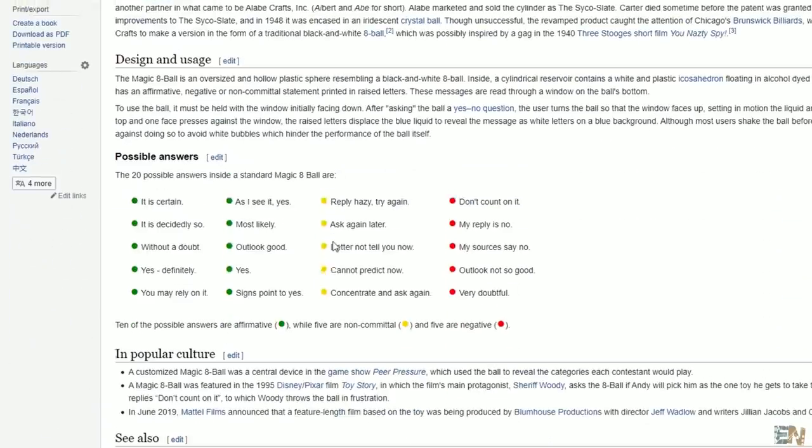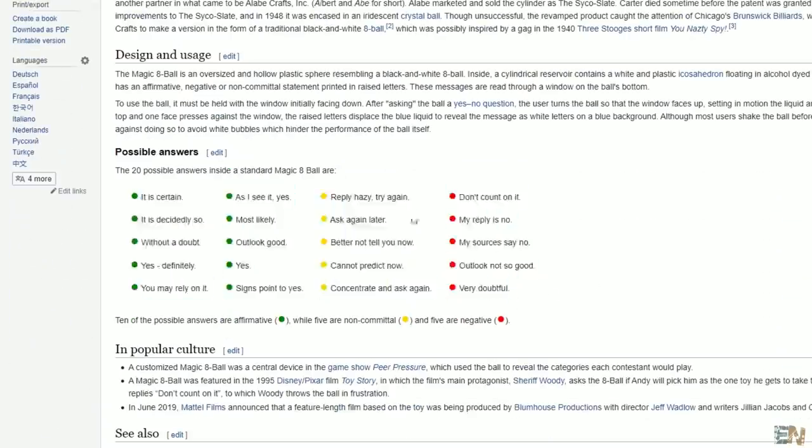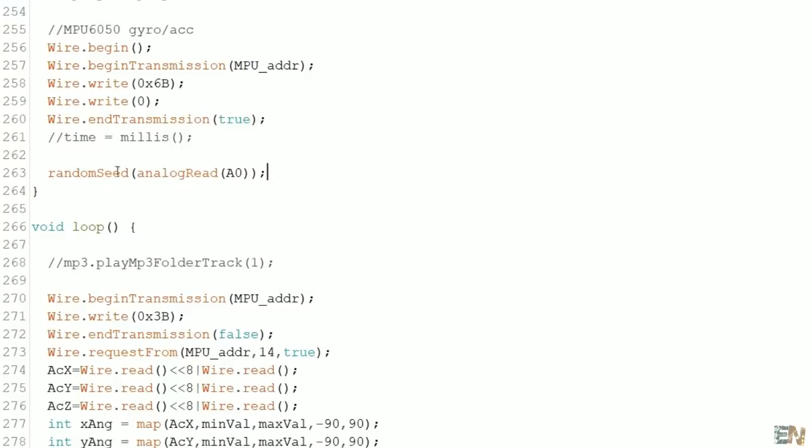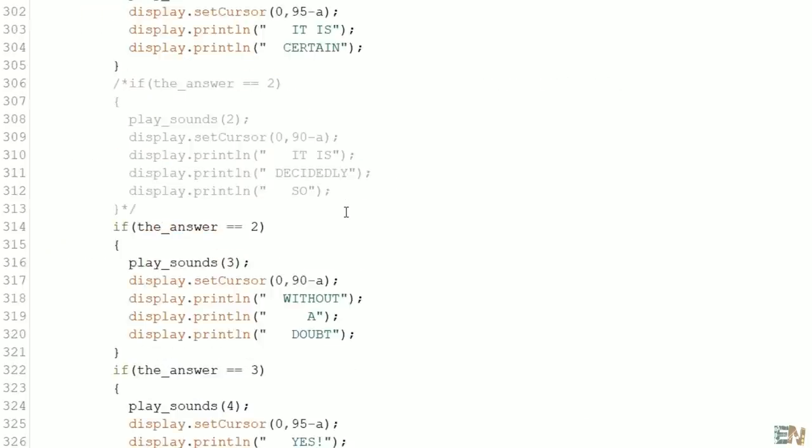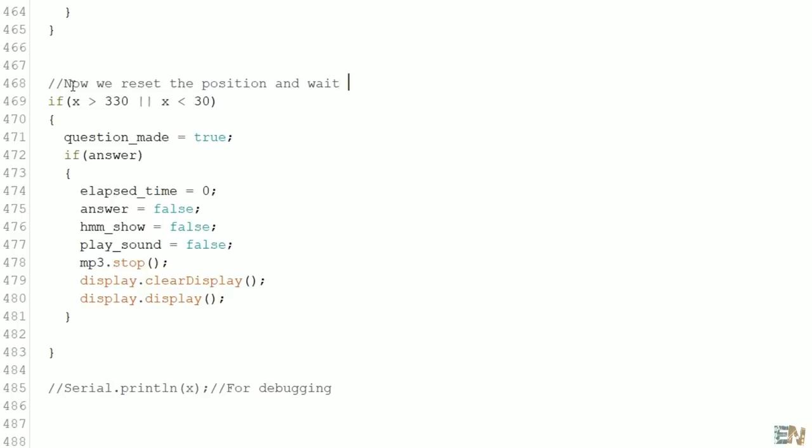If we look on Wikipedia, the magic 8 Ball has 20 answers. Because the Arduino has low memory, I've only used 15. To get a random start as well, I'm using the random seed function depending on the analog input A0. We print the selected answer onto the OLED display, and then we reset the position of the ball when the gyro detects that the ball is facing upwards once again.